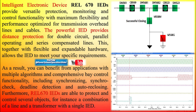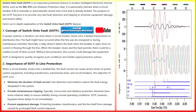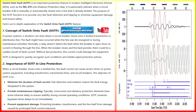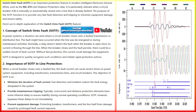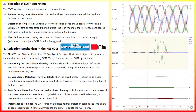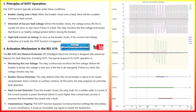In power systems, a situation can arise where a circuit breaker closes onto a faulted transmission or distribution line. The fault might have occurred when the line was de-energized or during maintenance activities. Normally, a relay doesn't detect the fault when the breaker is open since no current is flowing through the line. When the breaker closes and the fault persists, there could be a sudden inrush of fault current. Without fast protection, this current could damage the equipment. SOTF is designed to quickly recognize such conditions and initiate rapid protection actions.